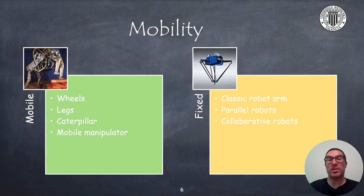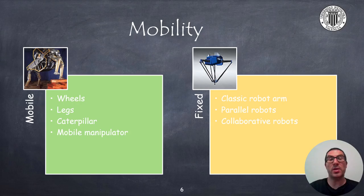Another way to classify robots is through their mobility, which is conditioned by their mechanical structure, the type of actuators, and the type of power supply. Obviously, the environment and application will also affect this because they provide the overall context where the robot is going to be used. We can distinguish between fixed and mobile robots. Mobile robots can have wheels, legs, or caterpillar chains. Also, we can find mobile manipulators, which are robotic arms mounted on a mobile base.